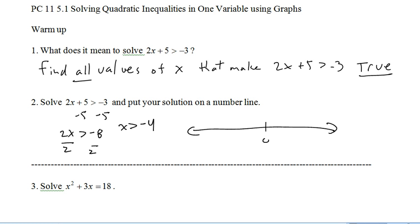Divide by 2, x is greater than negative 4. So, on a number line, we'd have 0 there. Negative 4 would be over here. We're going to put an open circle on negative 4 to show that it's just a boundary because it's not going to make this true. x is only greater than negative 4. So, we have a boundary at negative 4, and then everything greater than that will make that true.